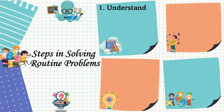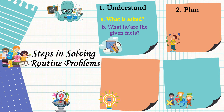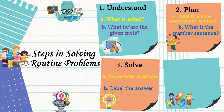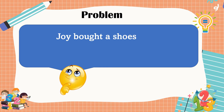These are the steps in solving routine problems. First, we should understand the problem — read the question twice or thrice, know what is asked, and what are the given facts. Second, formulate a plan — consider what operations to be used and what is the number sentence. Third, carry out the plan and solve the problem, showing your solution and labeling the final answer. Lastly, check or look back by going back and checking the flow of your computation.